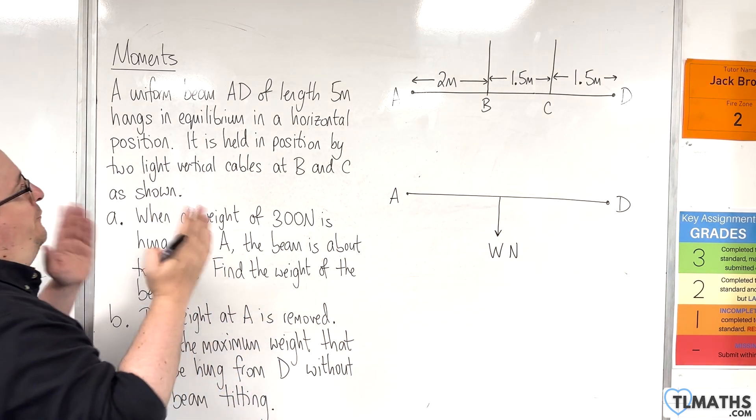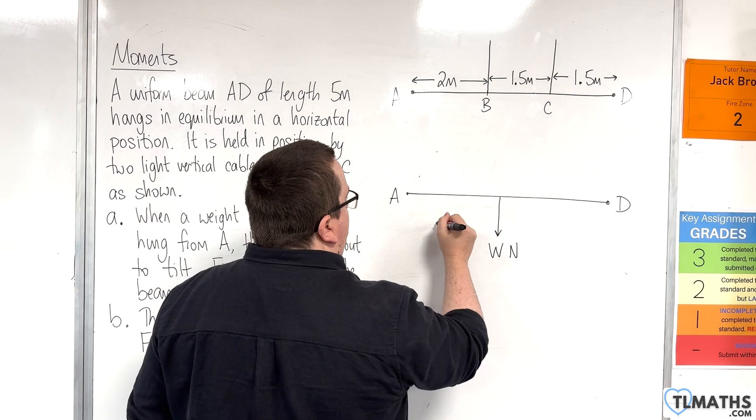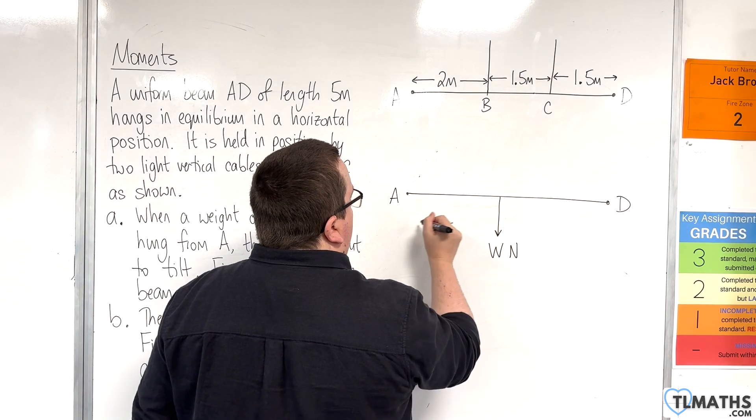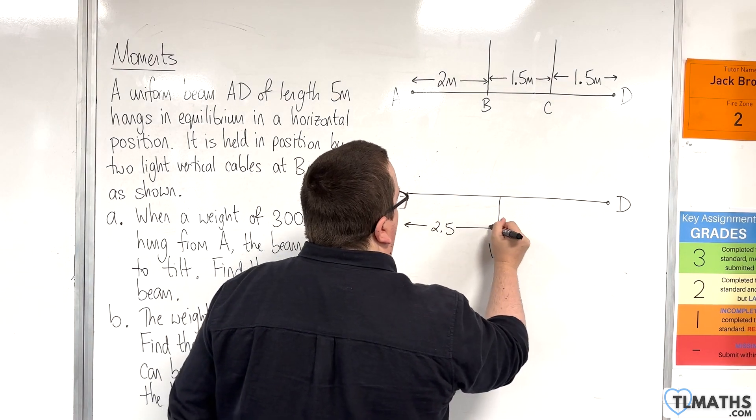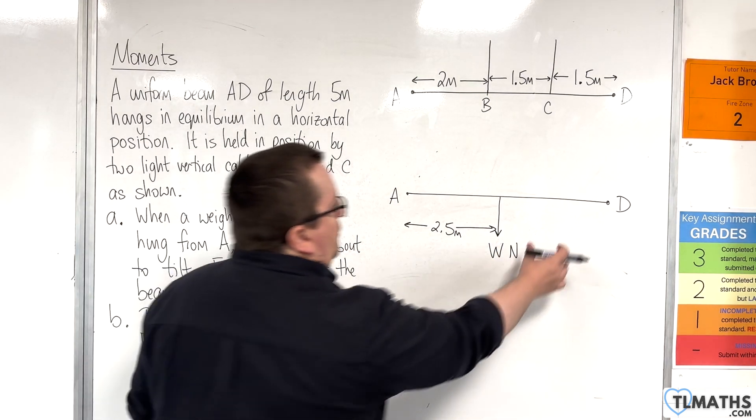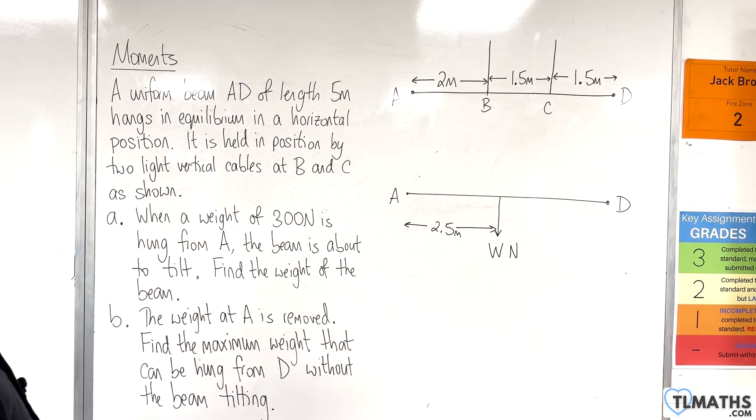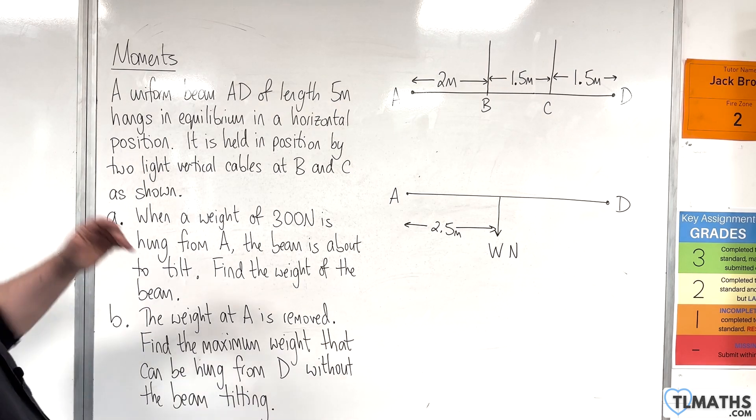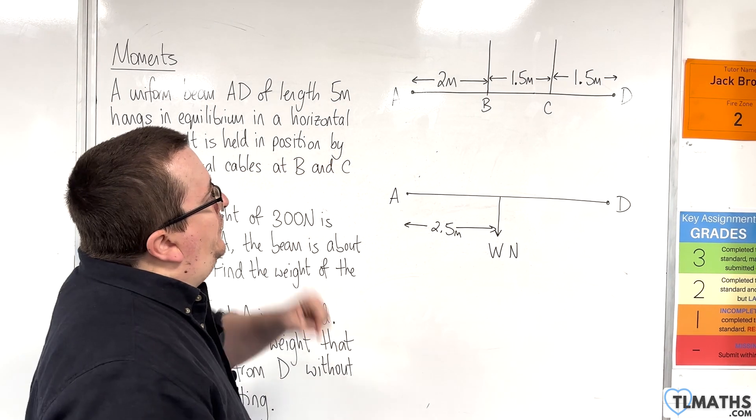And it's of 5 metres in length, so the distance from A to the centre will be 2.5 metres. And we could also put 2.5 metres on that side if we wanted to. Now, we've got the two cables, B and C.